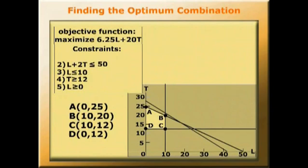Let's consider point A. We can work out how much profit he'll make if he chooses point A by plugging each of these coordinates into the objective function. The objective function is 6.25L + 20T.